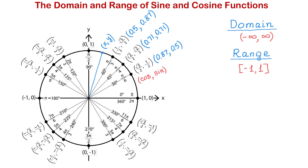Now let's take a look at the values of cosine. At 0, the value of cosine is 1, and as the angle increases the values of cosine decrease. At pi over 2, the value of cosine is 0. So from 0 to pi over 2, the values of cosine decrease from 1 to 0. In quadrant 2, the values of cosine are negative and change from 0 to negative 1. In quadrant 3, they change from negative 1 to 0. In quadrant 4, the values of cosine change from 0 to positive 1. So just like with sine, the smallest value that cosine takes is negative 1 and the largest value is positive 1.